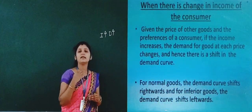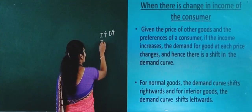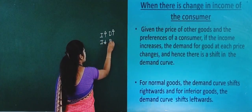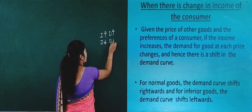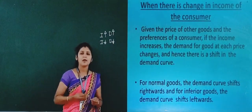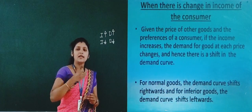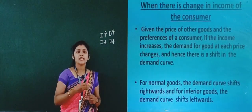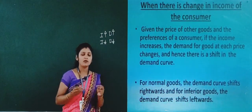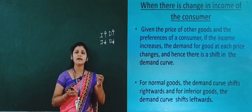When the income of the consumer decreases, the consumer's demand will also decrease, because consumers demand according to their income. This is the relationship between demand and income.